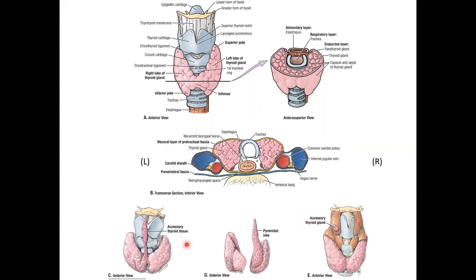Because thyroid tissue migrates from the foramen cecum down the thyroglossal duct to rest around the trachea, in some people not all of that tissue migrates fully. About a third of patients have what's called the pyramidal lobe — a remnant of the tissue traveling down the thyroglossal duct. For these people, some of the tissue didn't make it all the way down, but it's still connected, functional glandular tissue, just shaped a little differently.